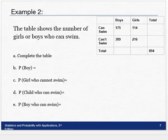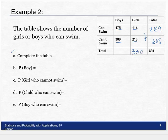Example 2. The table shows the number of girls or boys who can swim. You can see that's not complete. And that's the very first thing it's going to ask you to do, is to complete the table. Well, hopefully you can figure this out. These two, I'm just going to add them up for my total, and I get 289. Same thing here. Add them up for my total, 605. And then these two I just add down. So I get 330 and 564.